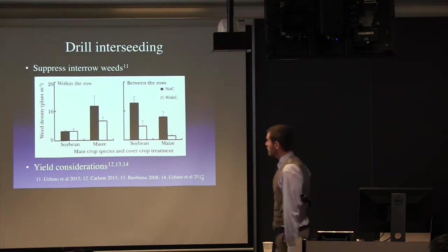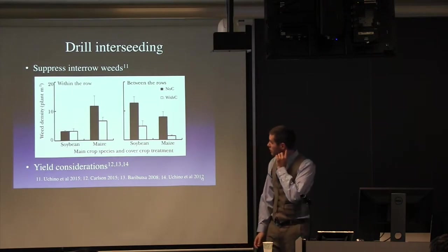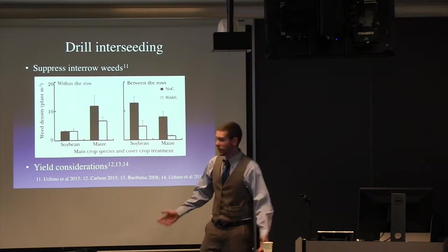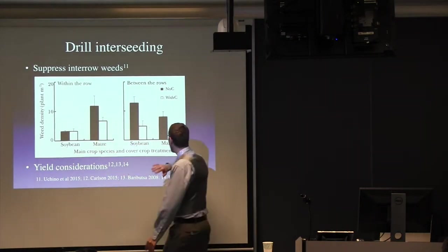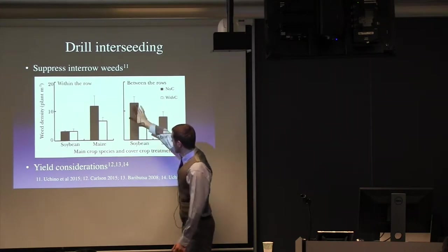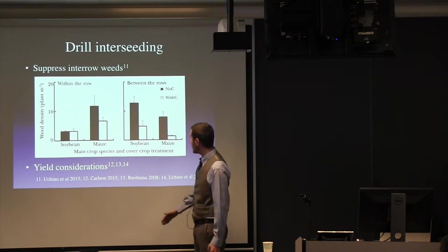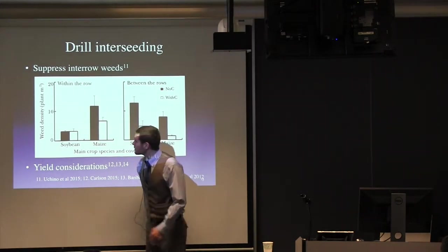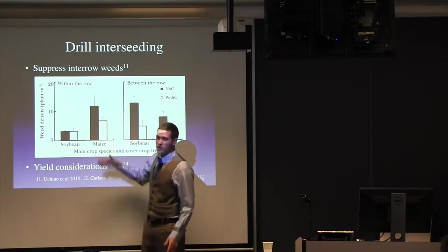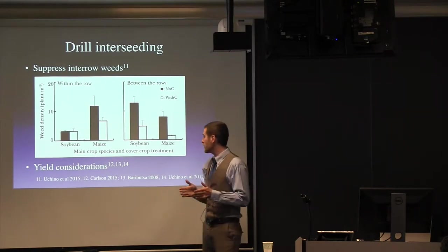Another really exciting thing about drill interseeding is how well they suppress interrow weeds. So this is from a paper out last year. And because we're just talking about corn today, just focus on the corn graphs. So the black bars, no cover crop in the interrows. The white bar has cover crop. And there's a significant reduction in weed density, both between the rows and within the rows, which they considered about 10 centimeters either side of the corn.